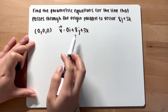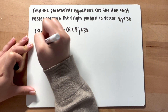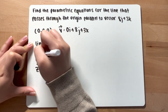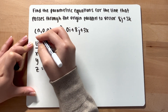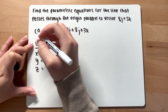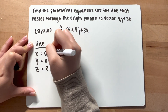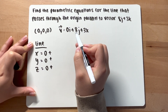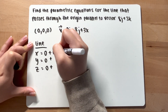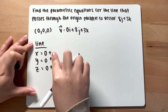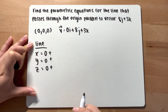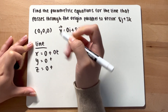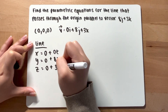Once you know the point and the vector, you can write the equation of a line. The equation of a line would be x, y, and z equaling the corresponding points, which is 0, 0, 0, adding with — every time you write an equation of a line, it would be t instead of the variables. So it would be 0t, 8t, and 3t.